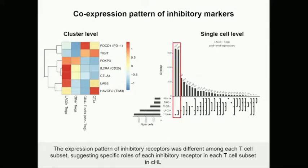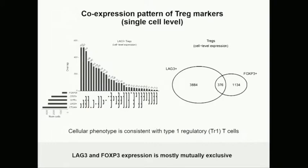Focusing on LAG3, the most common co-expressed partner is mostly CTLA-4, and that's the bulk of cells seen in Hodgkin lymphoma biopsies. This combination of LAG3-positivity and FOXP3-positivity is consistent with an inducible or type 1 regulatory T-cell — TR1 cell — that seems to be very abundant in classical Hodgkin lymphoma. A very important translational point is that it is rather mutually exclusive to FOXP3-positive cells.